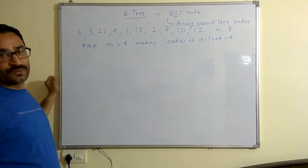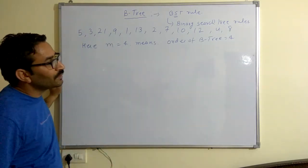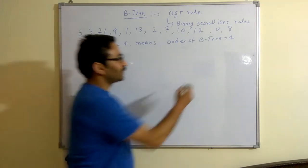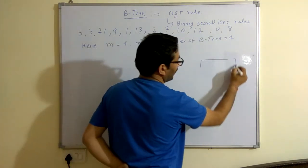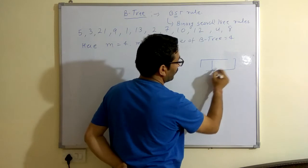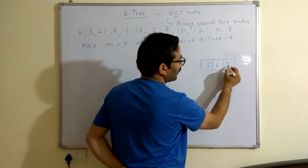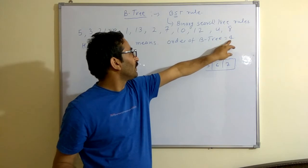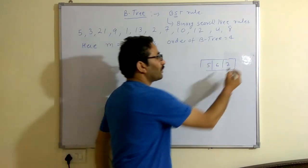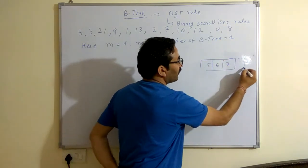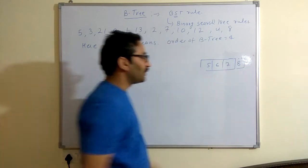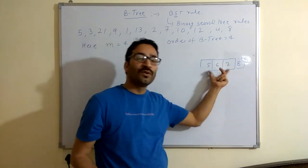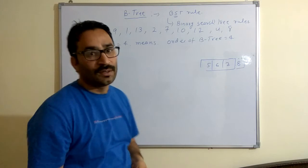The maximum number of values a node contains is equal to k-1, which means equal to 3 when k=4. So the order for this tree — taking the same order value — means when a particular node is going to overflow, it will split.